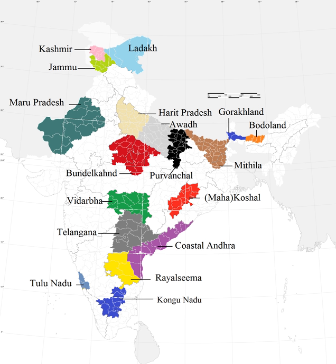Mithila is a proposed state which would cover the Maithili-speaking regions of Bihar and Jharkhand. There are 24 Maithili-speaking districts in Bihar, including Araria, Begasarai, Bagulpur, Bangka, Darbonga, East Champaran, Khadihar, Kageria, Kishanganj, Madhapura, Madhubani, Muzafarpur, Purnaya, Saharasa, Samastapur, Shihohar, Sitamari, Supal, Vishali, West Champaran, Mungur, and Jamui. There are six Maithili-speaking districts in Jharkhand: Diaghhar, Dumka, Gada, Jamtara, Pakhaur, and Sahebganj.